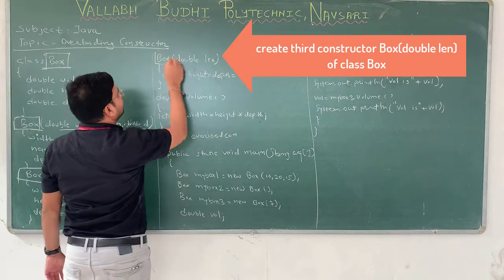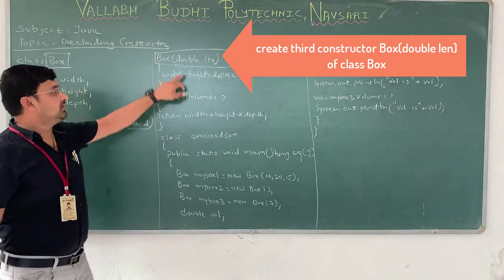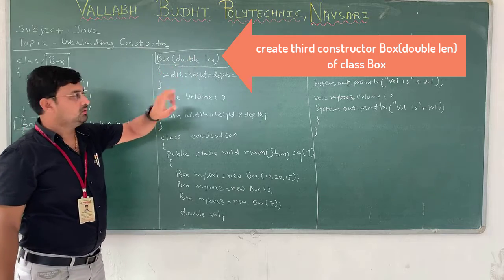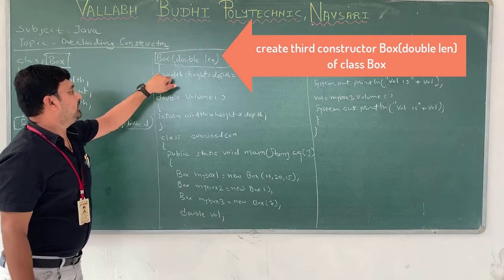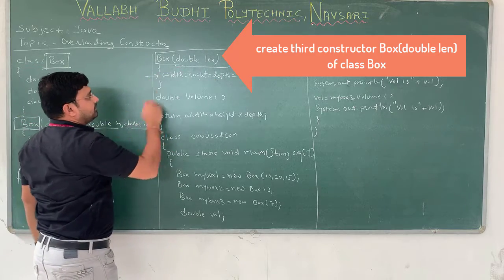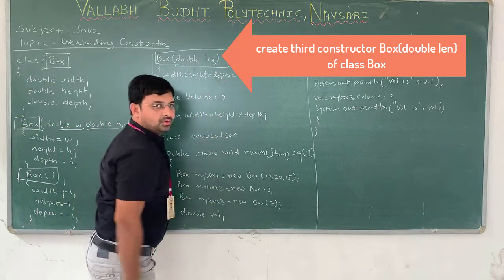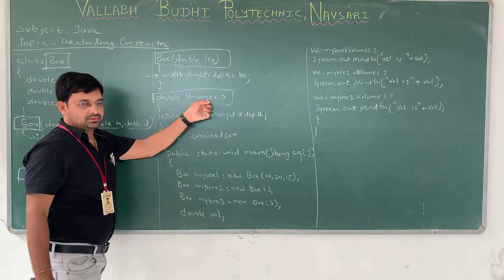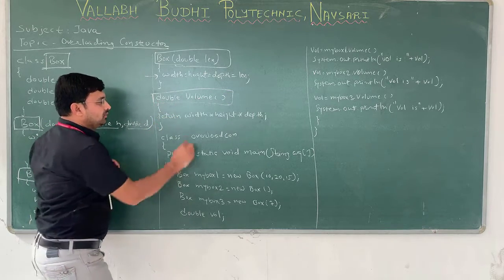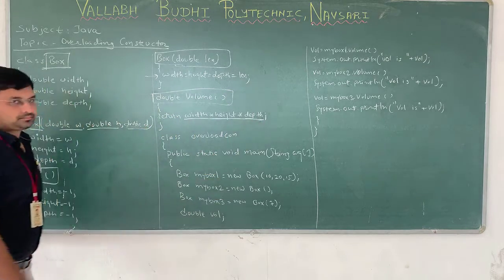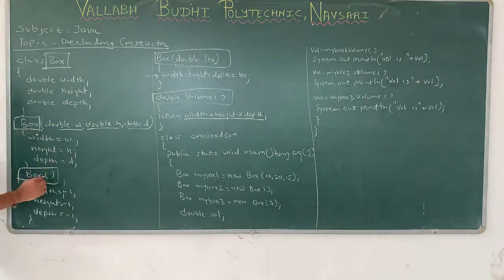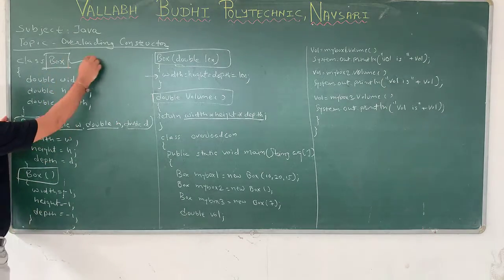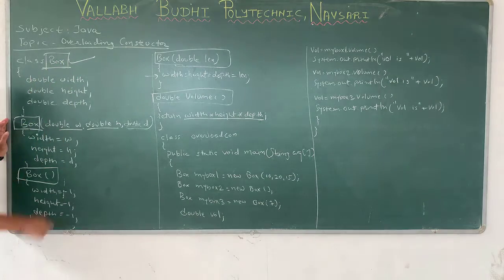Then we take another constructor with one parameter: length. In this constructor, we set width equal to height equal to depth equal to length. So you can see there are 1, 2, and 3 Box constructors declared in the same class. This structure is called constructor overloading.